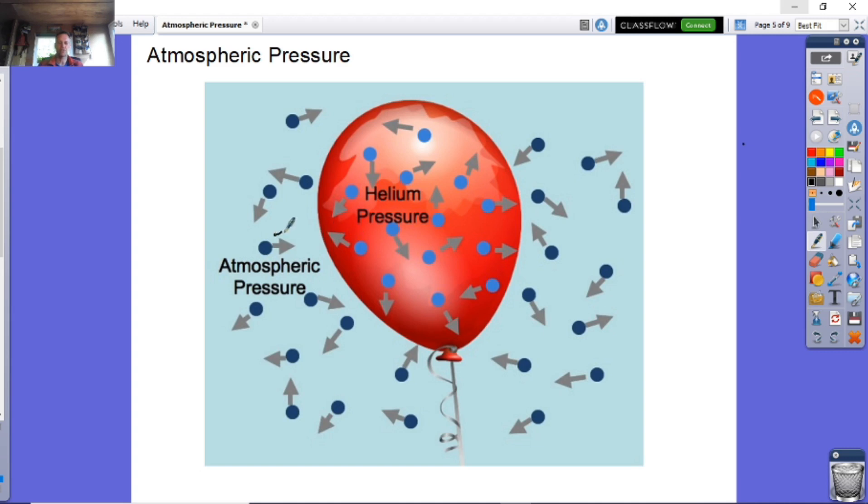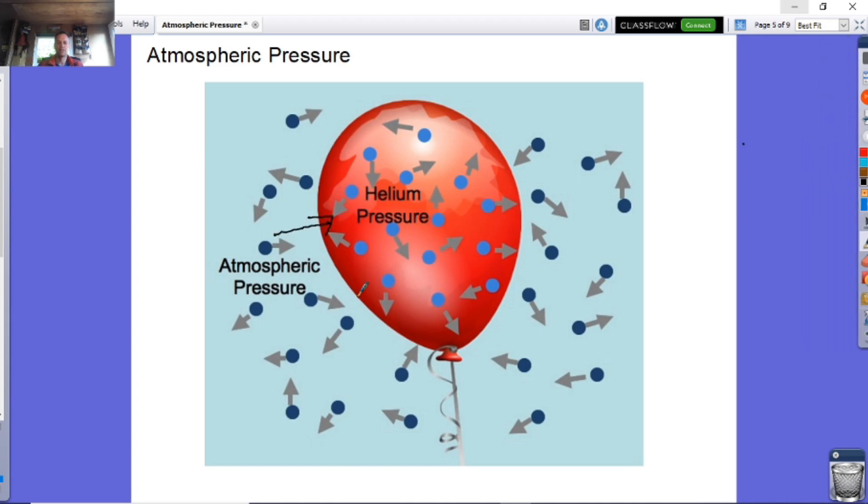So what's happening is you've got the atmospheric pressure outside due to the air particles, and then inside this balloon you've got pressure pushing out. That pressure pushing out is all due to the helium particles moving around. Now if this balloon is staying at the same shape, this must mean I have balanced forces.